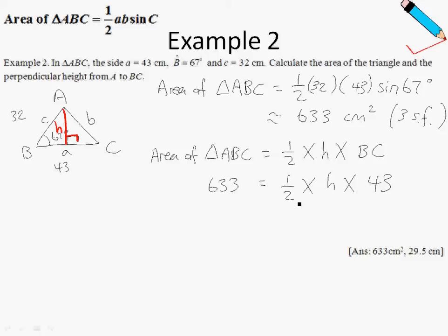Multiply both sides by 2. And divide both sides by 43. Press this in your calculator, and finally you will work out that your H is approximately 29.5 cm.